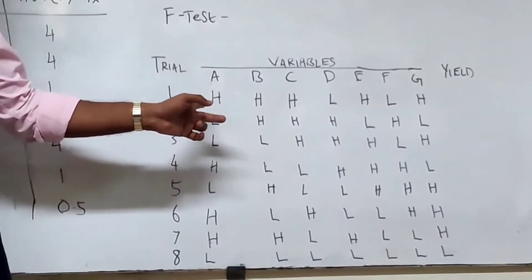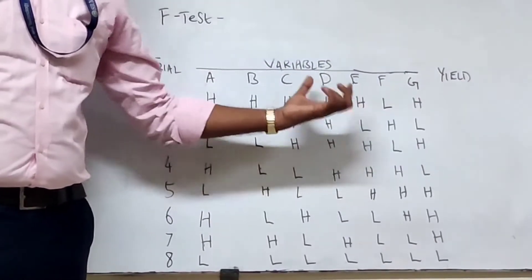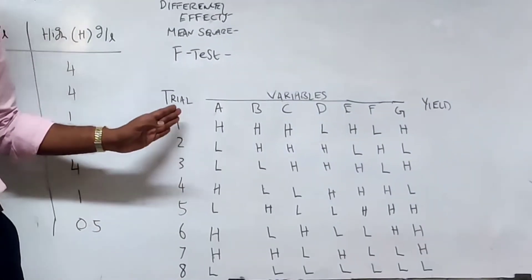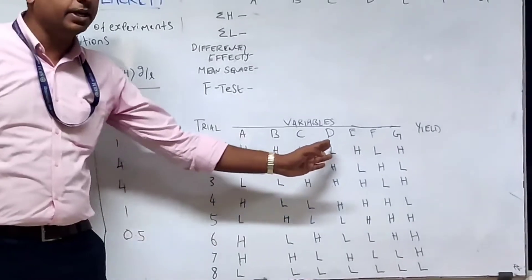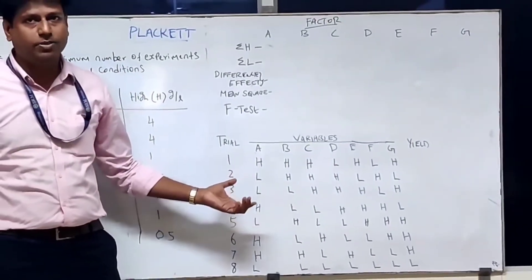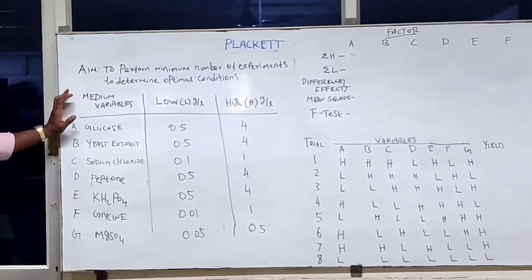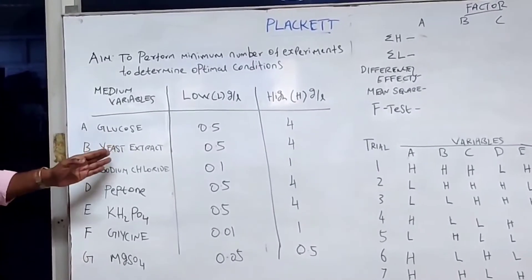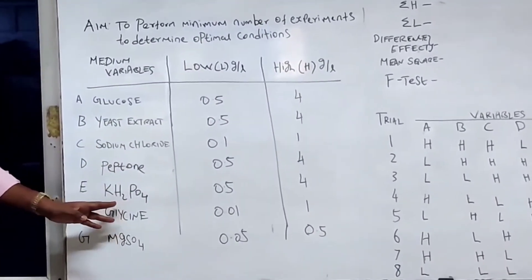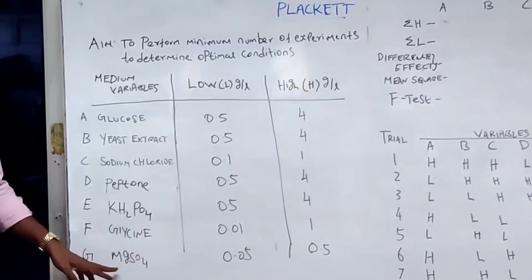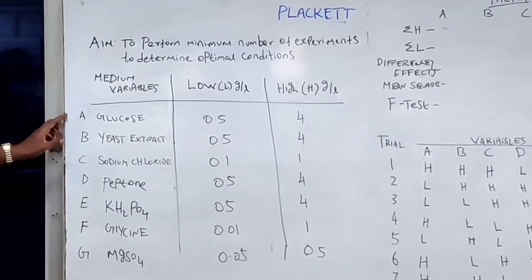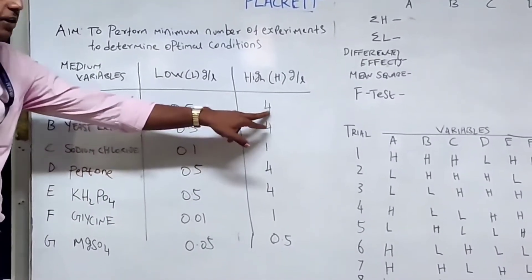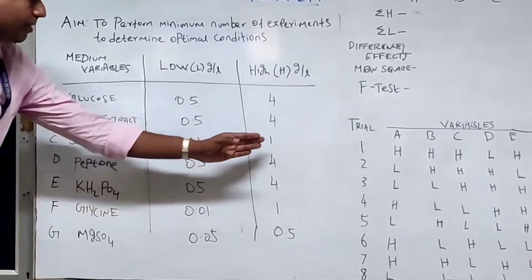The first trial will be a combination of A, B, C, D, E, F, G. We conduct the experiment and check whether it improves the product or the biomass. In our experiment, the 7 medium variables are: A = glucose, B = yeast extract, C = sodium chloride, D = peptone, E = potassium dihydrogen phosphate, F = glycine, and G = magnesium sulfate. The lowest value is 0.5 and the highest value is 4, with corresponding lowest and highest values for each variable.